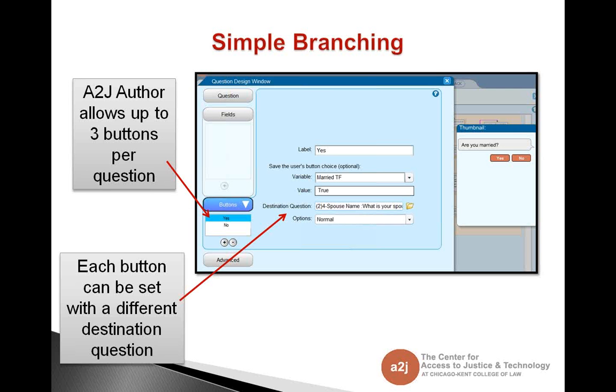Simple branching is done by using the Buttons tab in A to J Author. You can have up to three buttons per question. In this example, I only have two, but you can simply add another button with that little plus sign under the Yes and No. Each button can be set to have a different destination question. So here you can see that the Yes button is what we're on right now. And if the end user selects Yes to the Are You Married question, it's going to direct them to the destination question, spouse name. If they selected No, it would take them to the children set of questions. You can also change the labels. So for example, if you wanted them to answer married, single, divorced, all of those buttons can lead to a different outcome.